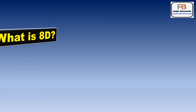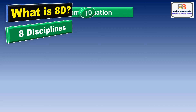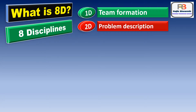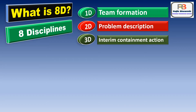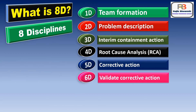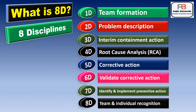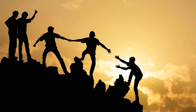Now let us understand what is 8D. 8D means Eight Disciplines. Let us see what are those eight disciplines: 1D - Team Formation, 2D - Problem Description, 3D - Interim Containment Action, 4D - Root Cause Analysis (RCA), 5D - Corrective Action, 6D - Validate Corrective Action, 7D - Identify and Implement Preventive Action, 8D - Team and Individual Recognition. Now I will explain all the disciplines one by one.